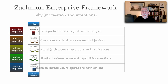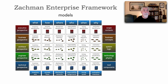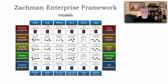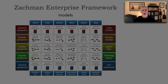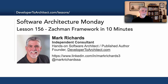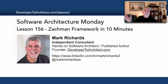And there you have it — that is the Zachman Enterprise Framework. It's really useful as a taxonomy. It's not a process and it's not showing you how to do certain things, but it's a great way of modeling the enterprise and having these important pieces of information at hand. This has been lesson 156 — a little deviation since I haven't done enterprise architecture in a while. Thank you so much for listening; stay tuned in two weeks for another lesson on Software Architecture Monday.